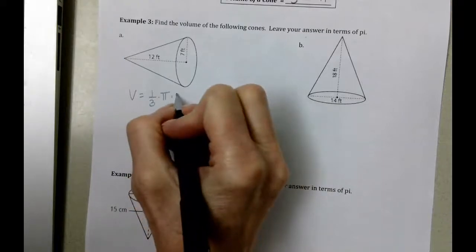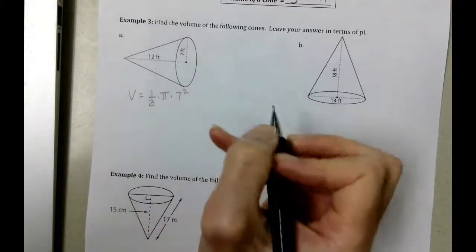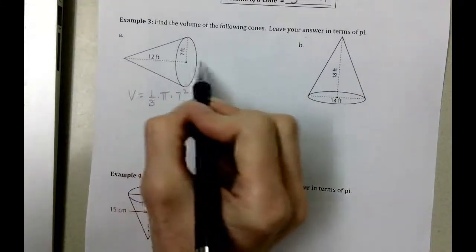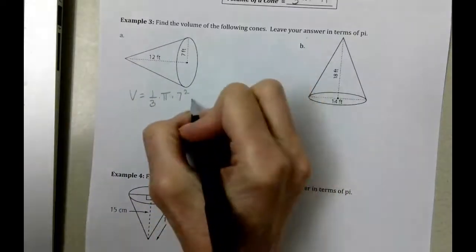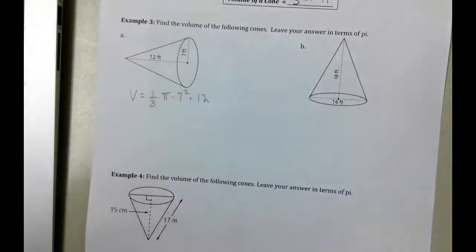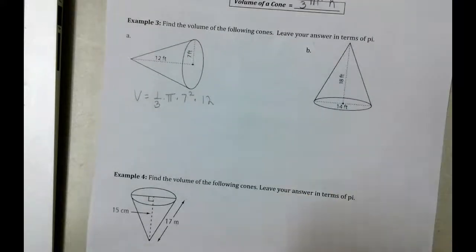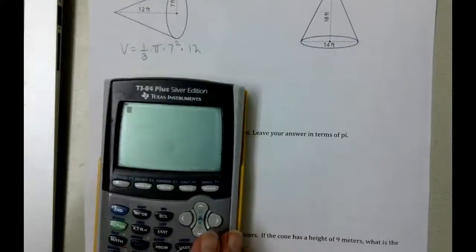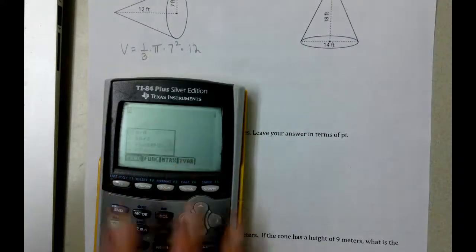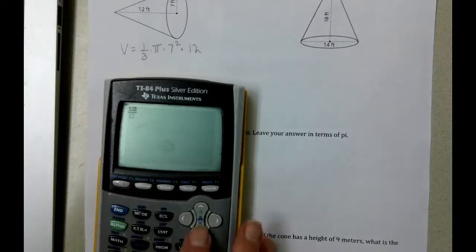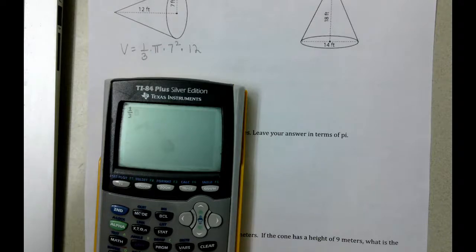Our radius is 7 and then the height of our cone is 12. We can type that into our calculator. We've got one-third times pi, and it says leave answer in terms of pi, so I'm not going to multiply by pi. I'm going to multiply by 7.